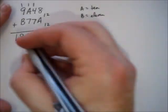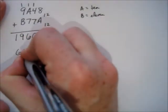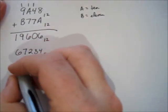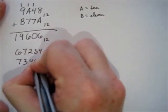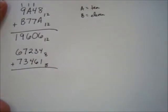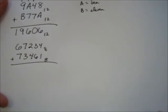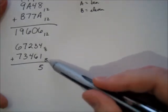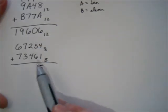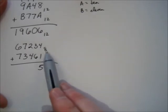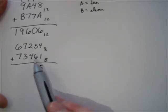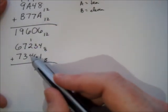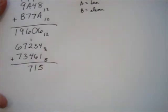Let's do another one. 67234 base 8 plus 73461 base 8. Okay. 1 plus 4 is 5. And that's perfectly fine to write the numeral for 5, because that's less than 8, so we have that numeral. 3 plus 6 is 9. I don't have a numeral for 9 if I'm in base 8. So, how many 8's go into 9? 1 eight does, with 1 left over.